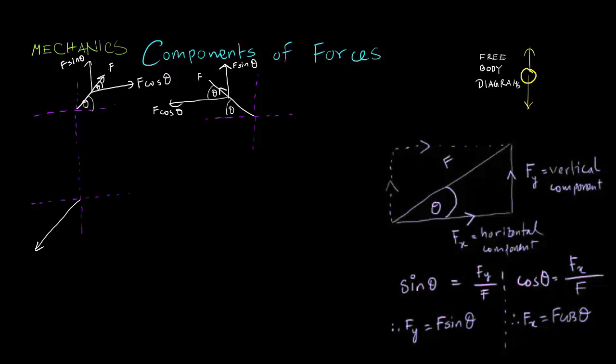In the third quadrant, if F is this and the angle it makes is theta, we can break it down into this component and this vertical component. So this is theta, this is going to be F cos theta, and this is F sine theta.